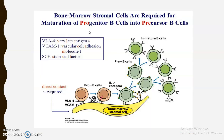This is a diagrammatic representation of the maturation of B cells. The bone marrow stromal cells provide the microenvironment for the maturation of B cells. The stromal cells are also producing interleukin-7, which is necessary for the differentiation and development of B cells.